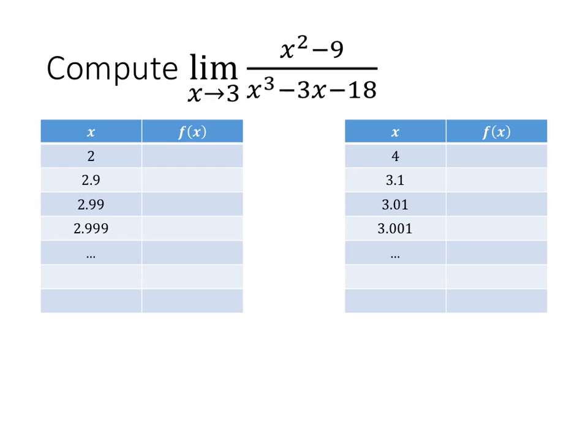The x values we try might look something like this. In this first table, we're looking at x values that are closer to 3 from below 3. And in this second table, we're looking at x values that are getting closer to 3 from above 3.